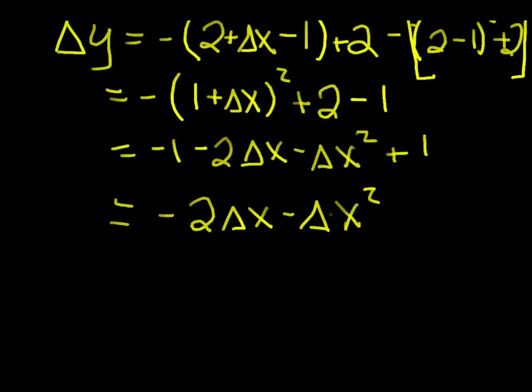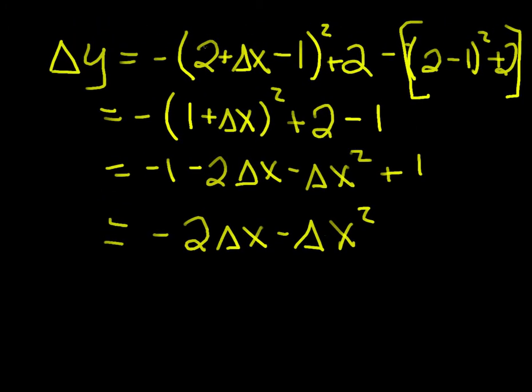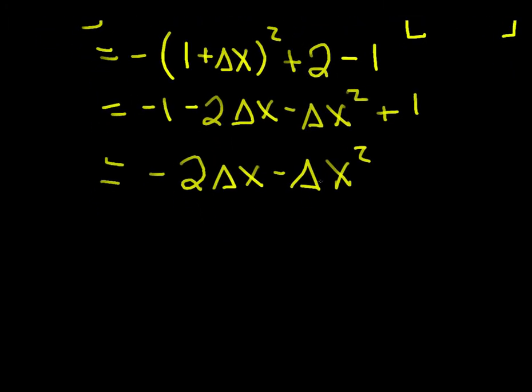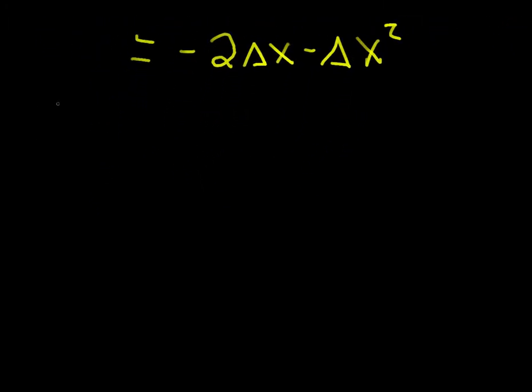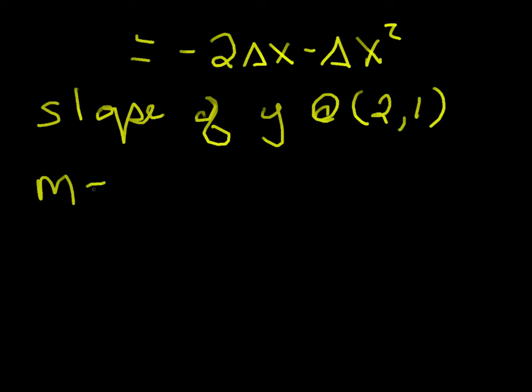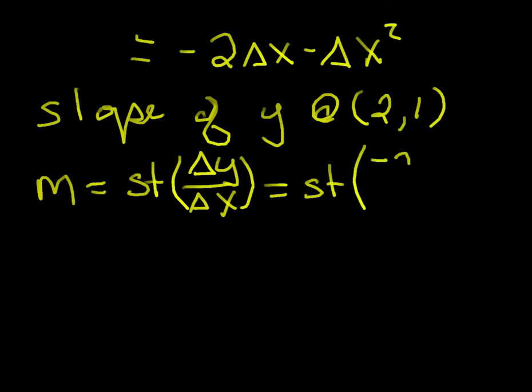So that's what the change in y is. That's what we just calculated here. The change in y, if we do this infinitesimal movement of delta x, then y changes this much. Negative 2 delta x minus delta x squared. That's a change in y, so then slope will be the standard part of delta y over delta x.